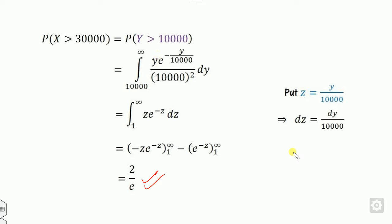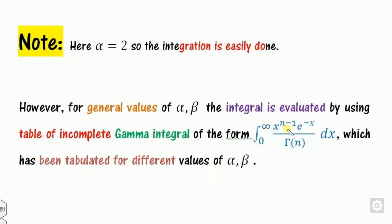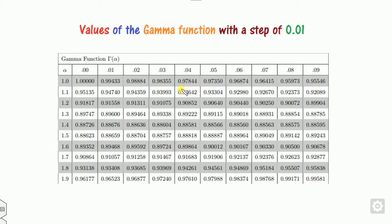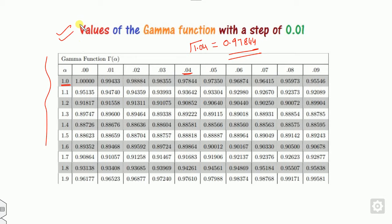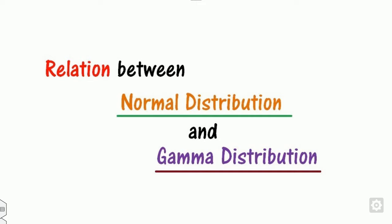With alpha equal to 2, alpha minus 1 is 1, so the integration is easy. If alpha were not 2, solving directly would be difficult. In that case, you can use the gamma integration table available in any standard probability and statistics textbook. For example, the value at a certain point reads 0.97844 from the table. This is how you use the gamma distribution tables.